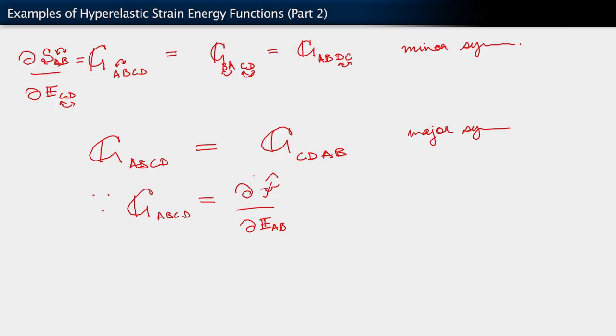But when we take a second derivative with respect to e, we get our elasticity tensor. But those derivative orders can be reversed, provided psi hat is sufficiently smooth.